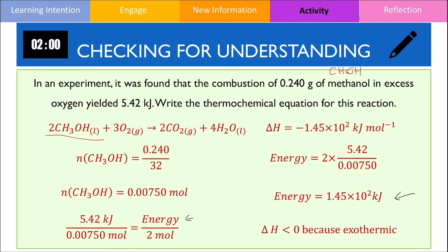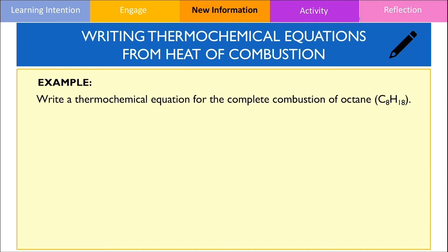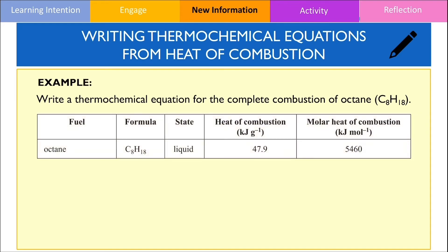In the next section of this video, I'm going to show you a different example where we find the thermochemical equation using the heat of combustion values from the data booklet. In this example, we need to write the thermochemical equation for the complete combustion of octane. According to the data booklet, octane should be in the liquid state when writing your chemical equation. The balanced chemical equation for the combustion of octane should look like this.